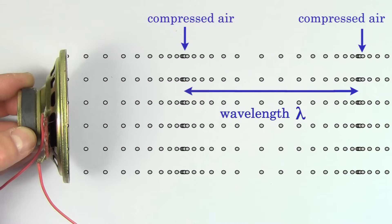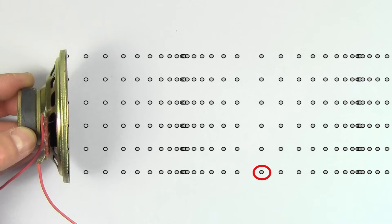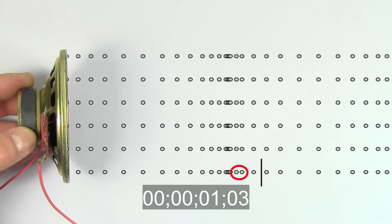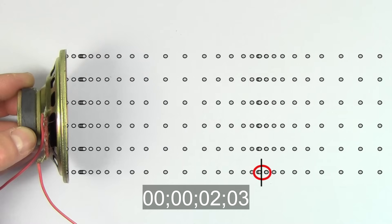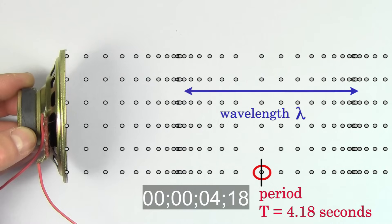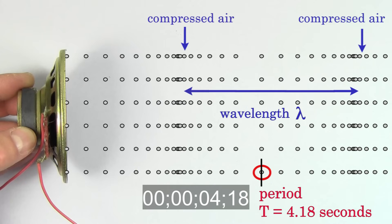Be careful — people get wavelength and period mixed up all the time. The period of a sound wave is the time it takes for an air molecule to oscillate back and forth one time. The wavelength of a sound wave is the distance between two compressed regions of air.